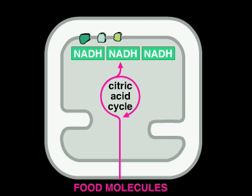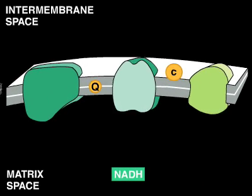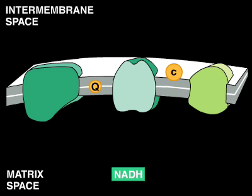The carrier molecules transfer the high-energy electrons to a chain of proteins called the electron transport chain, which is embedded in the inner mitochondrial membrane. The chain acts as a pump, using the energy of the electrons to move protons from one side of the membrane to the other.